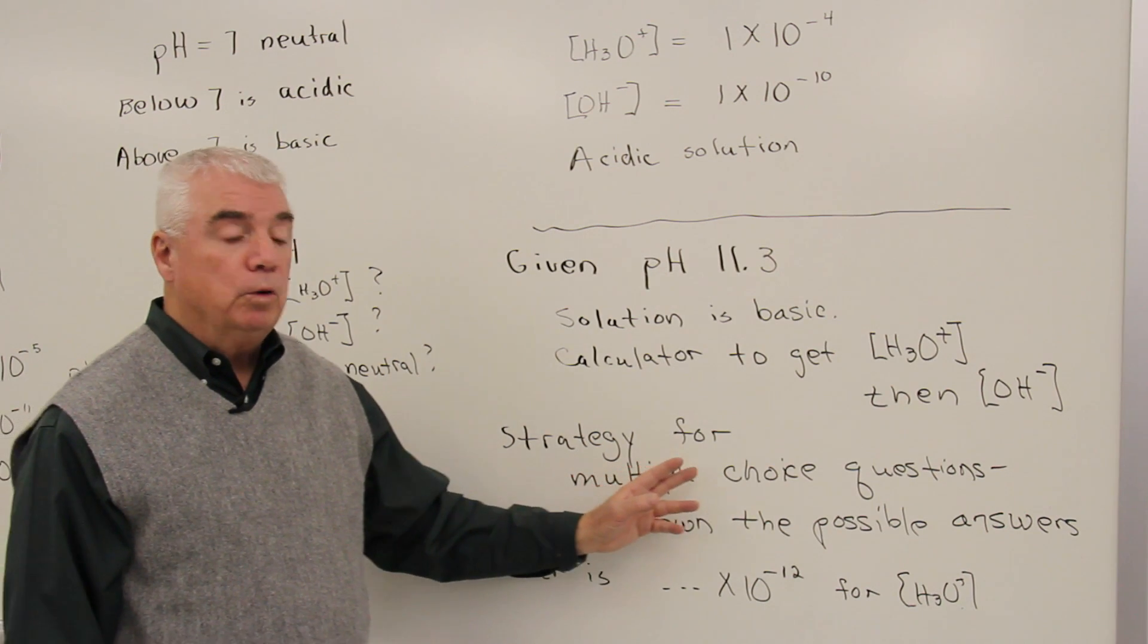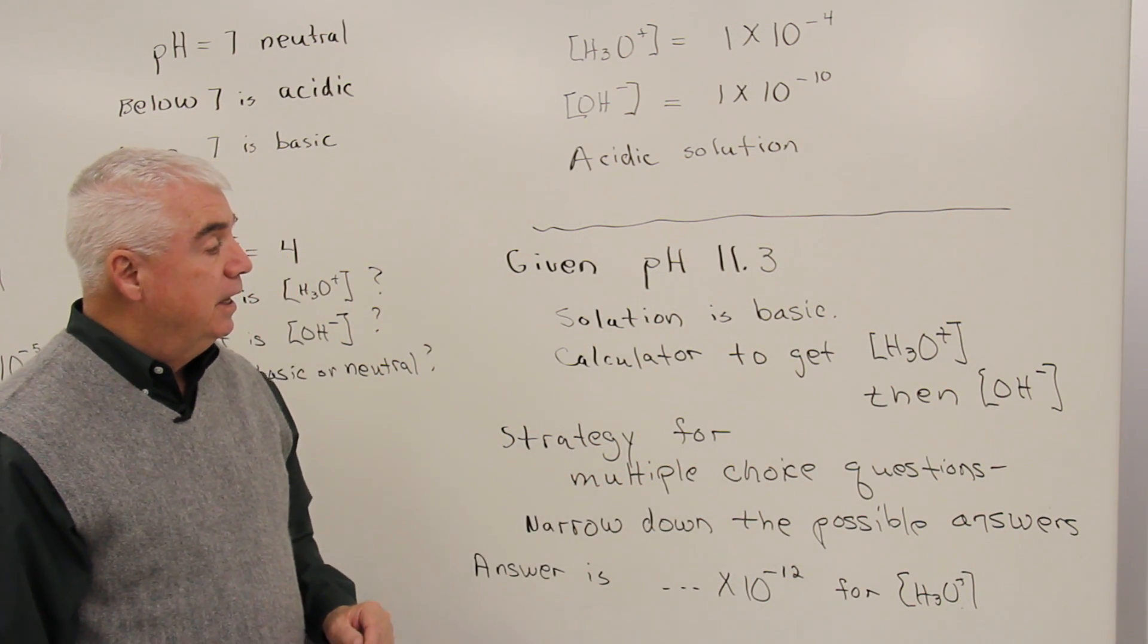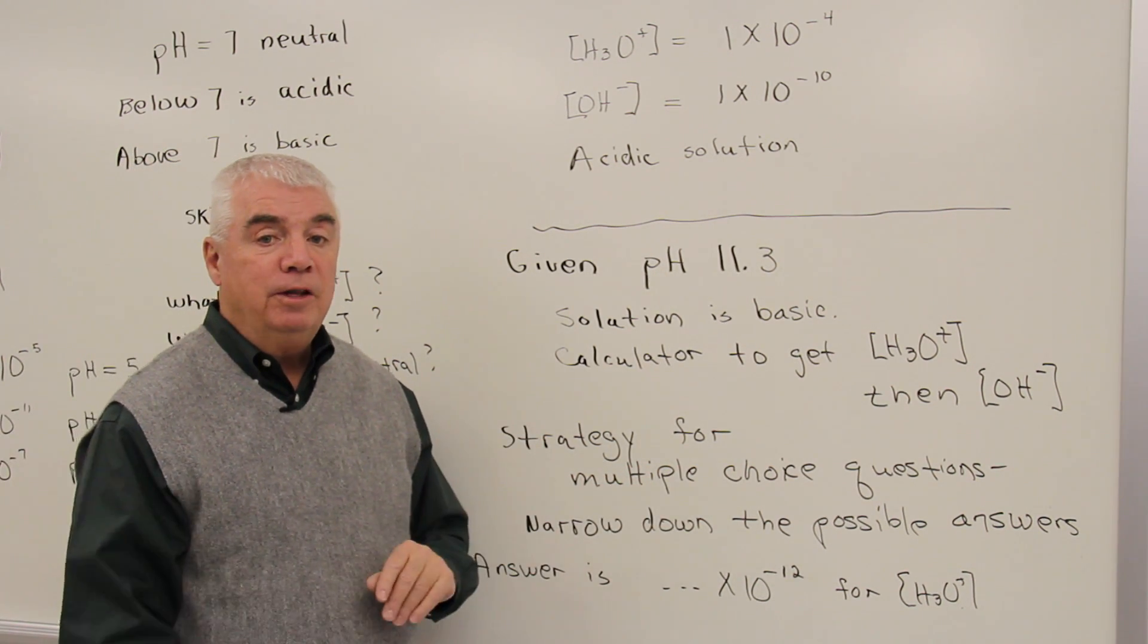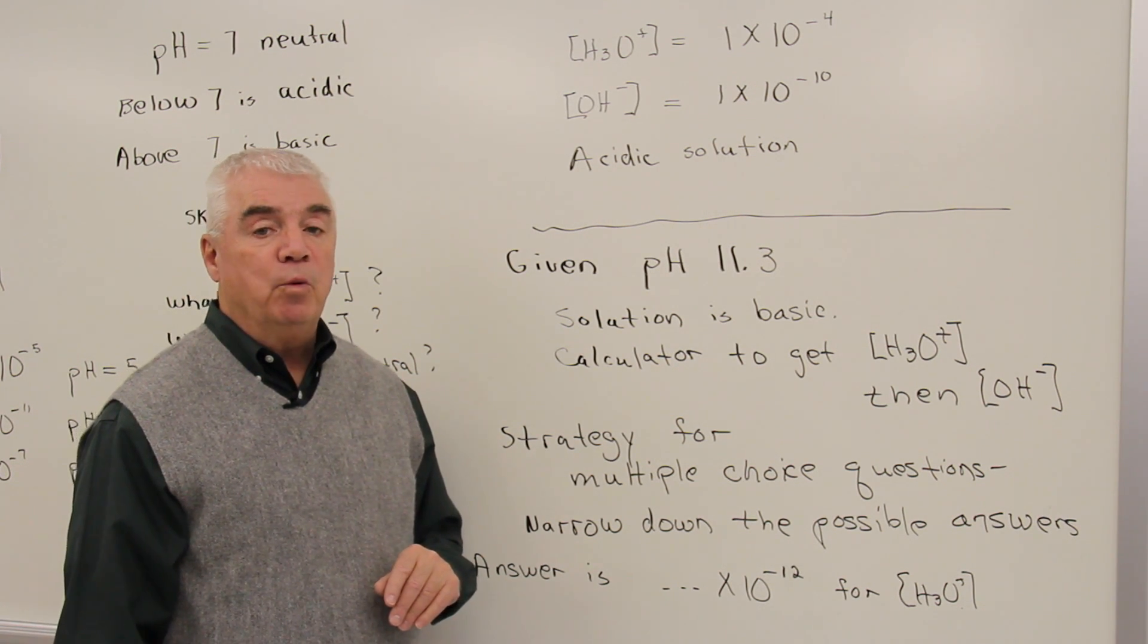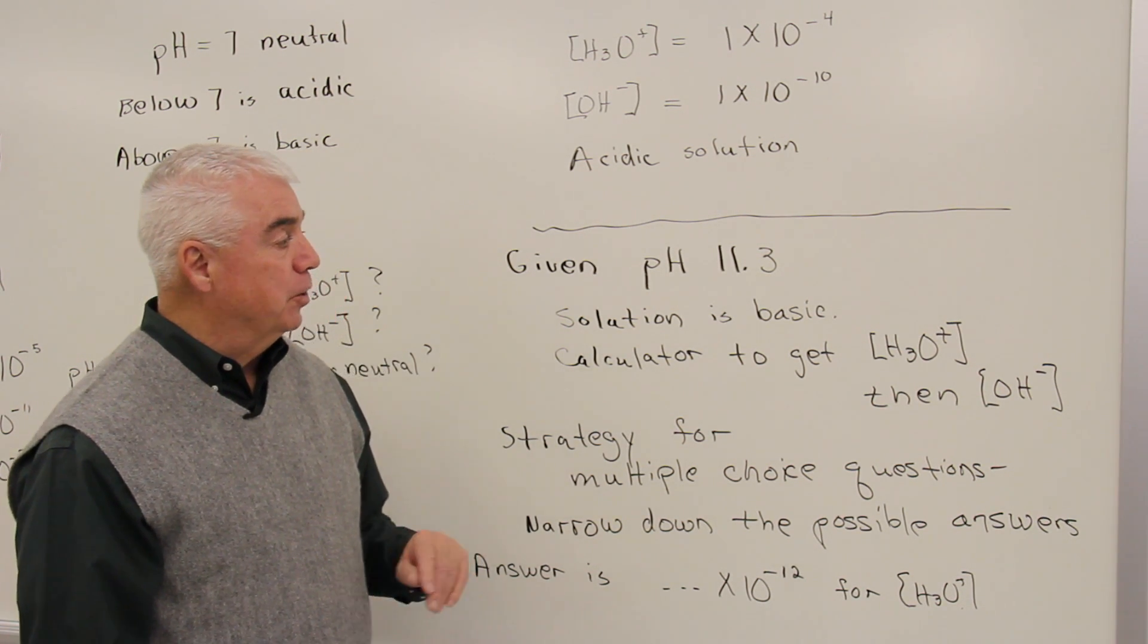Here's still another way around the dilemma. And it's a strategy for multiple choice questions. Let's see if we can narrow down the responses. If you've got four responses, let's pick out the one that's most likely the correct answer.